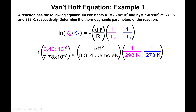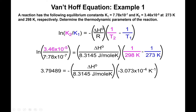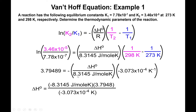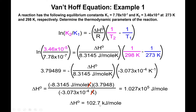Calculating: ln(K2/K1) equals 3.79489. Then 1/298 minus 1/273 equals negative 3.073×10⁻⁴. Solving for ΔH: multiply by negative 8.3145 and divide by negative 3.073×10⁻⁴. The Kelvin units cancel, giving a value in joules per mole — don't forget to divide by 1000 to get ΔH in kilojoules per mole.